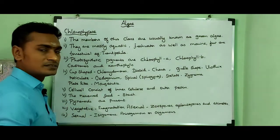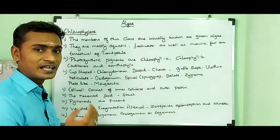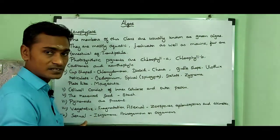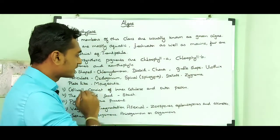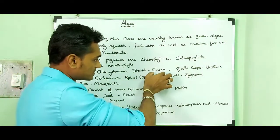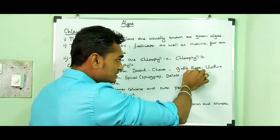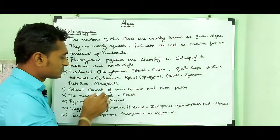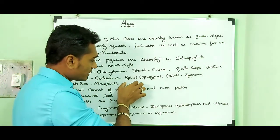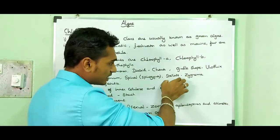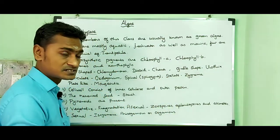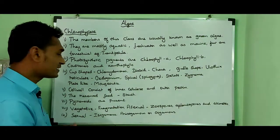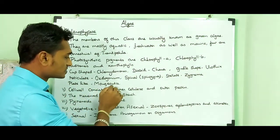Chlorophyceae algae contain different types of chloroplasts. For example: cup-shaped chloroplasts present in Chlamydomonas; discoid-shaped chloroplasts present in Chara; girdle-shaped chloroplasts present in Ulothrix; reticulate network-like chloroplasts present in Oedogonium; spiral-shaped chloroplasts present in Spirogyra; stellate (star-shaped) chloroplasts present in Zygnema; and plate-like chloroplasts present in Mougeotia.